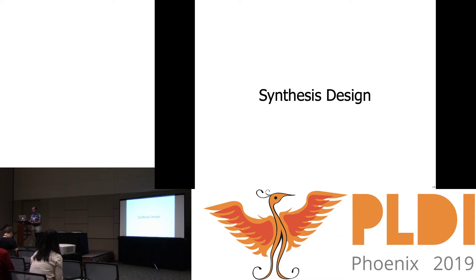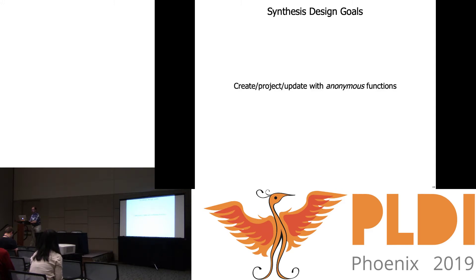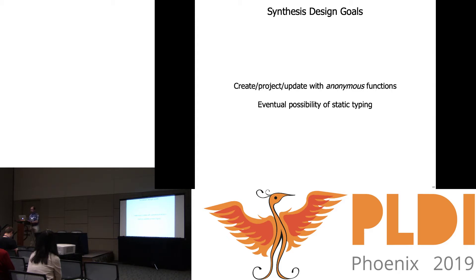The synthesis design I came up with after investigating several different record systems has these priorities: creation, projection, and update need to be anonymous functions. That was one of the big hitches with Racket's struct system, where every collection of columns requires defining a struct type, and that struct type definition gives you the creation and projection functions but not any update functions — you still have to write those yourself. Since Remora is meant to be statically typed, we want a design that fits more easily with static typing than Python's style of mapping strings to data whose type depends on which string you asked about.